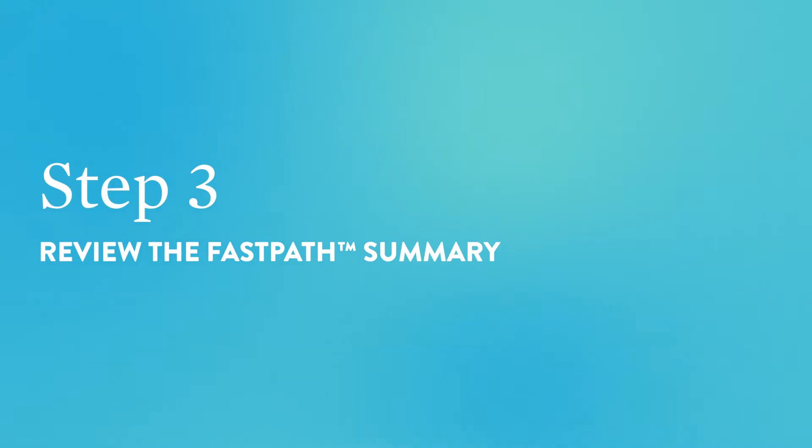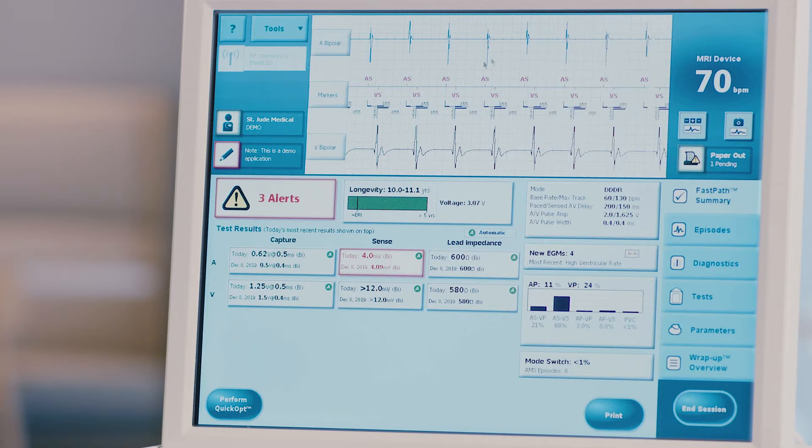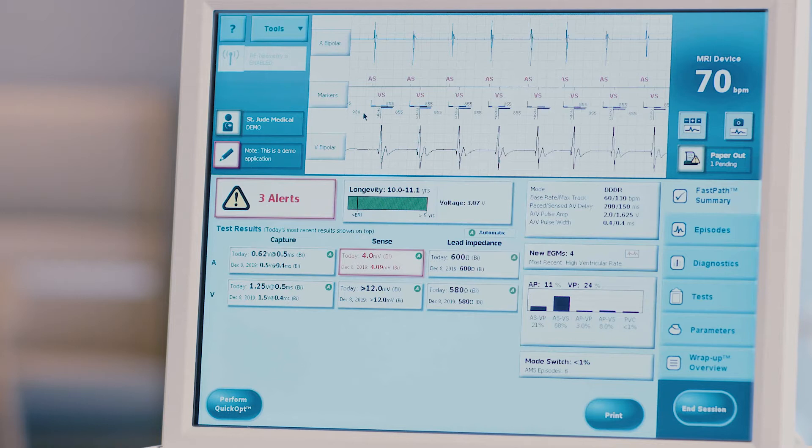Step 3: Review the fast path summary. This home screen will provide an overview of diagnostic information. Assess the patient's rhythm at the top of the screen in the live EGM display. Make note of the signals and markers present. Assess the battery voltage and longevity estimate.